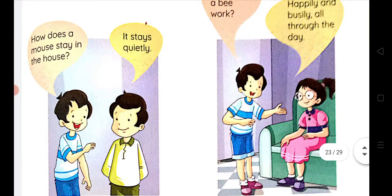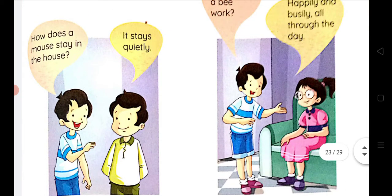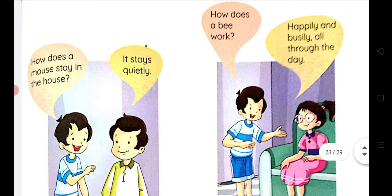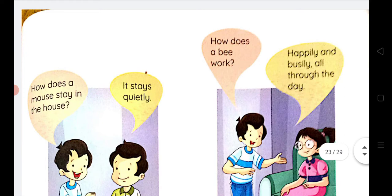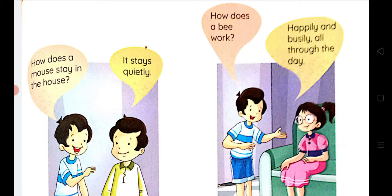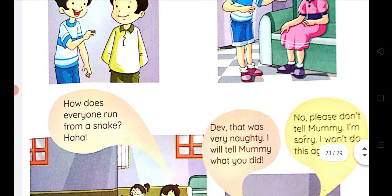How does a mouse stay in the house? It stays quietly. How does a bee work? Happily and busily, all through the day. So these are the sixth and seventh words we learned.